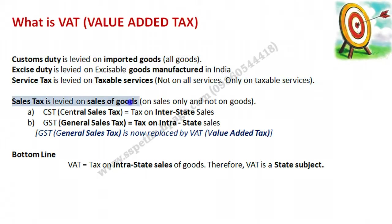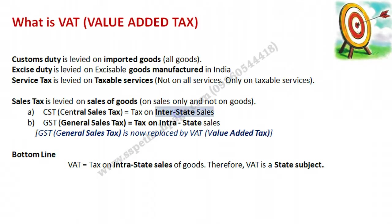Sales tax is levied on the sale of goods. Now this sales tax is divided into two parts: CST and GST. CST means Central Sales Tax. Central Sales Tax is levied on interstate sales.